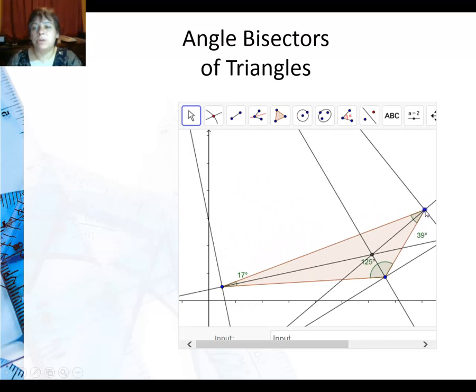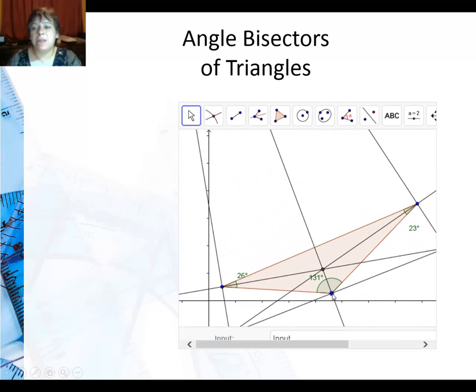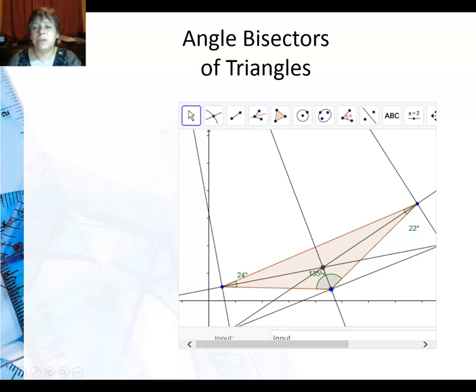Even when the triangle is obtuse, the intersection of the three angle bisectors is in the center.